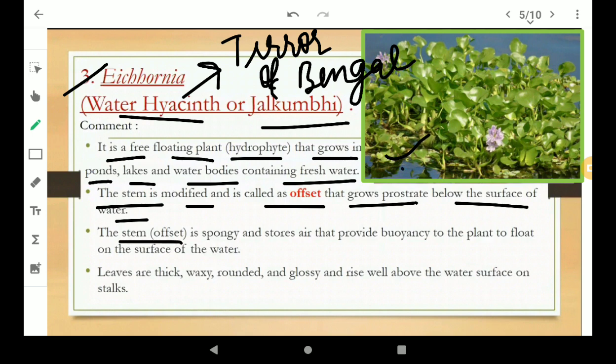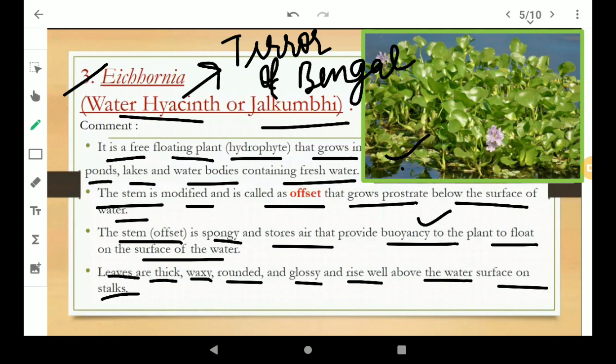The stem is spongy and stores air that provides buoyancy to the plant to float on the surface of water. Leaves are thick, waxy, rounded and glossy and rise well above the water surface on stalks.